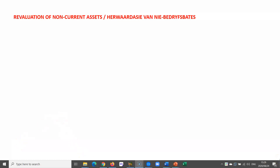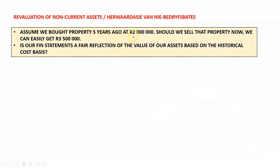What do we do in accounting if we have a non-current asset and the value of that asset has changed quite significantly since the acquisition date? Remember, when we bought the asset we capitalized all the costs associated with the acquisition. But now, let's say we bought a property five years ago at 2 million rand, and if we would like to sell that property now, we can easily get 3.5 million rand. We are showing that property in our books at 2 million rand — is our total asset value a fair reflection of the actual worth of the entity's assets?